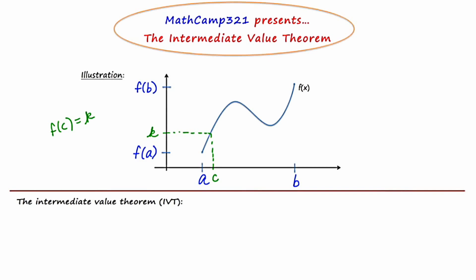In green, I've illustrated that there is one such c. But if I were to take a different value for k — let's use orange and move it up just a little bit higher, but still between f of a and f of b — I'll call this k sub 2. Now if I project the line straight over, it's going to hit the curve three times. If I project straight down, I'll have a c there, a second c there, and a third c there. So the Intermediate Value Theorem says that if all of the conditions are met, then I will have at least one c for which f of c will equal k.